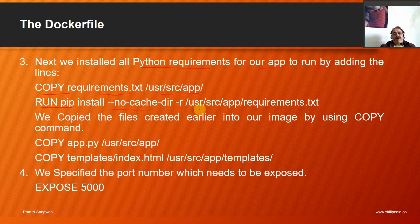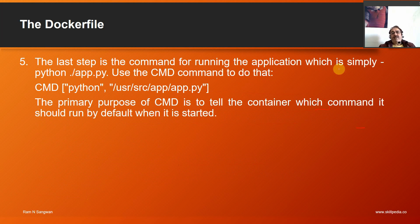The -r flag points to the requirements file we copied. We then copy our app files into the image: COPY app.py /usr/src/app, then COPY templates/index.html /usr/src/app/templates. We also specify EXPOSE 5000, the port where the application will be available. The last step is the CMD command for running the application: CMD python /usr/src/app/app.py. CMD tells the container which command to run by default when it starts.